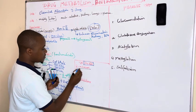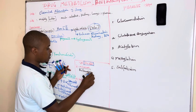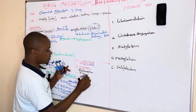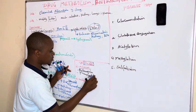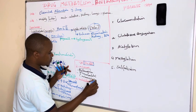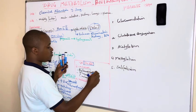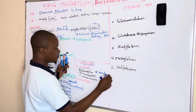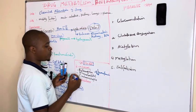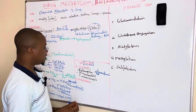Major inducers of cytochrome P450 include rifampicin, which is an anti-TB drug, phenobarbital, which is an anticonvulsant, and carbamazepine. These drugs induce the activity of CYP450 enzymes. When taken with a drug like warfarin, the overactive enzymes reduce the plasma concentration of warfarin, preventing its therapeutic effect.